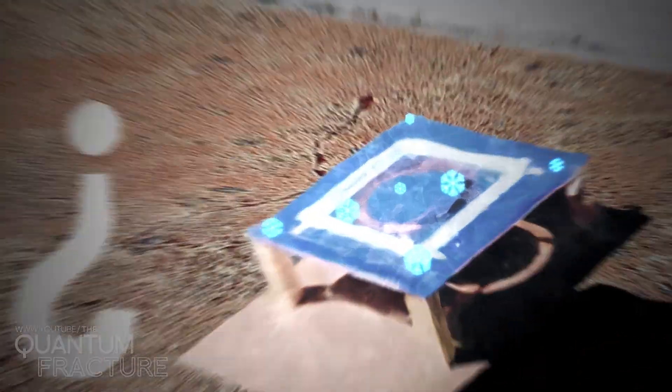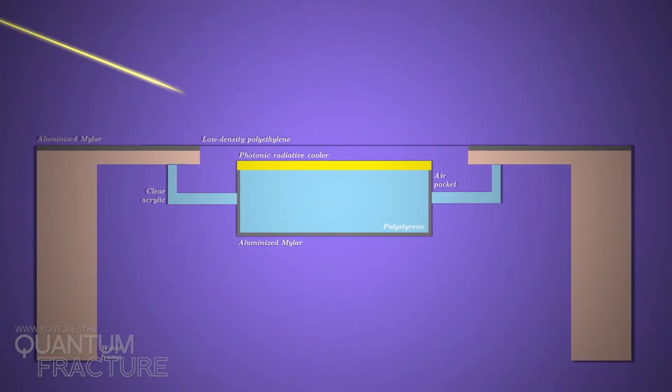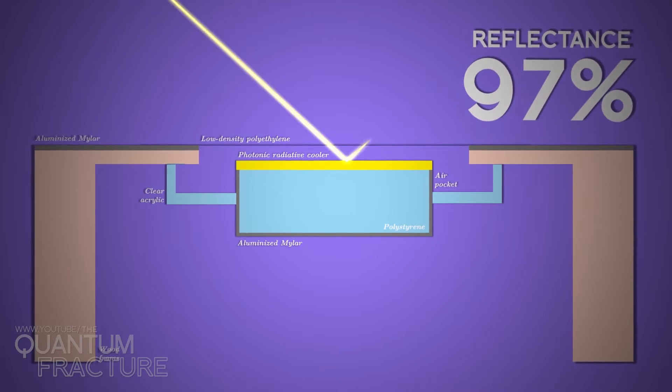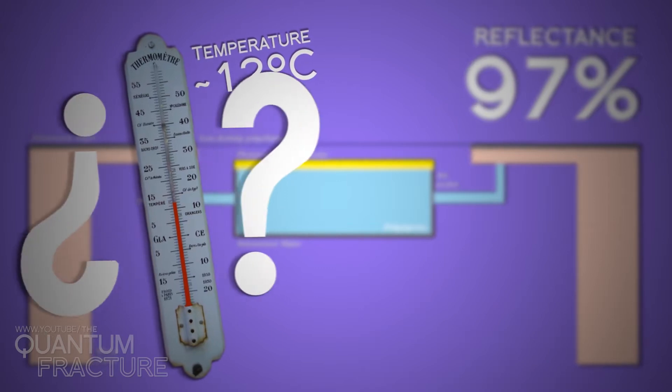How can that be? Part of the trick lay in its reflective top surface. A large portion of the light rebounded, wasn't absorbed, and didn't heat up the gadget. But for it to become colder than the air around it? What sort of magic is this?